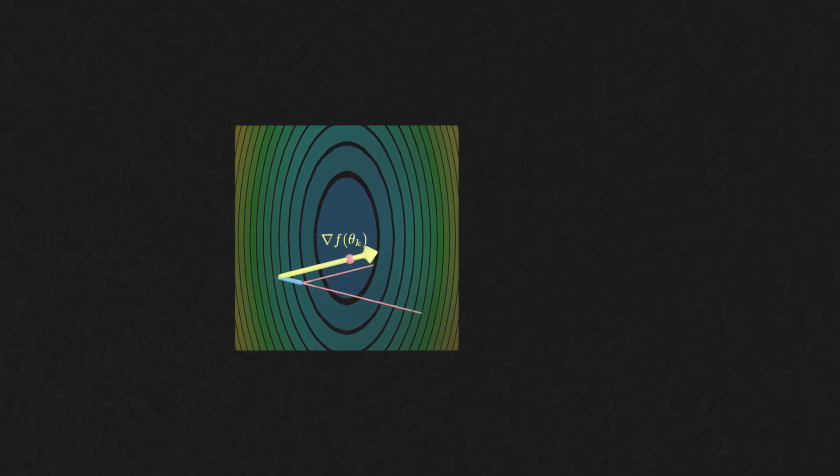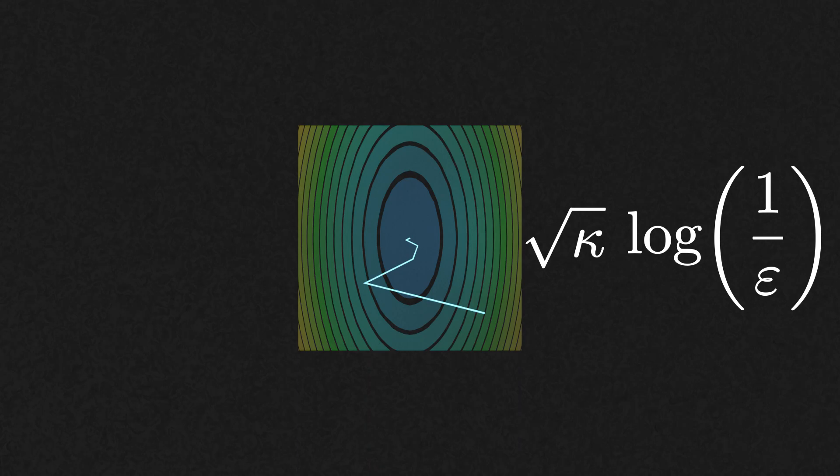And you can already see in this toy example the benefit of this seemingly small modification. Formally, we can show that with momentum gradient descent, we only need square root kappa times log 1 over epsilon iterations. So the time saving can be huge if kappa is large.